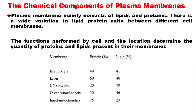This table shows the membrane composition of various organelles and cell types, listing protein and lipid composition. The membrane of erythrocytes, which are red blood cells, consists of 49% protein and 41% lipids. The hepatocyte membrane of liver cells has 60% protein and 40% lipids. The central nervous system myelin has only 20% protein and 79% lipid.